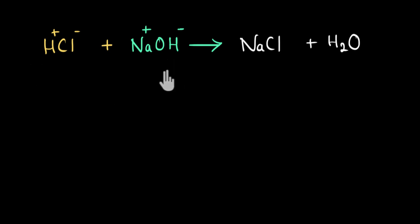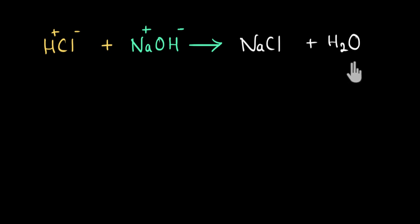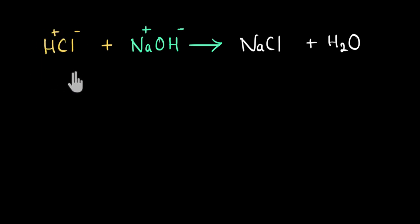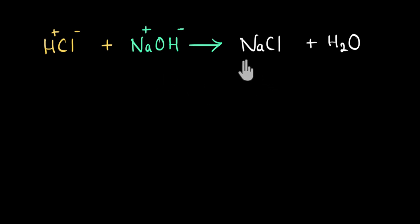So acid and a base react to give us a salt and water, and both of these are neutral — neither acidic nor basic. We define acids as compounds that increase the amount of H⁺ in an aqueous solution, and bases as compounds that increase the amount of OH⁻ in an aqueous solution. When you mix NaCl in water, it neither increases H⁺ nor OH⁻, and that's why NaCl is neutral.